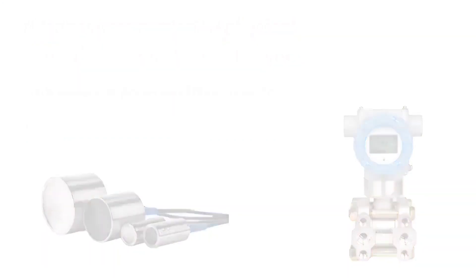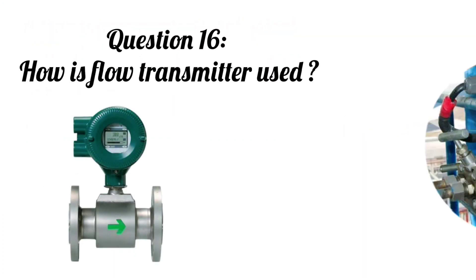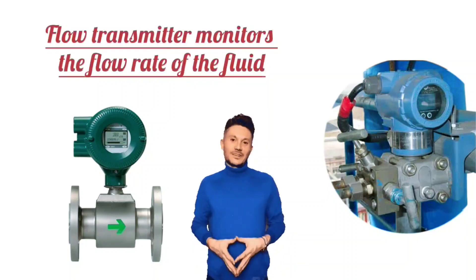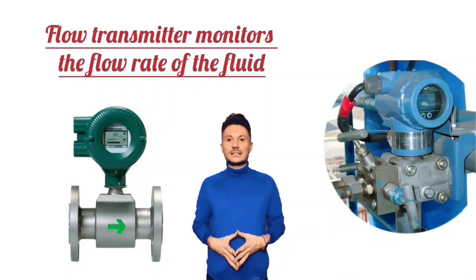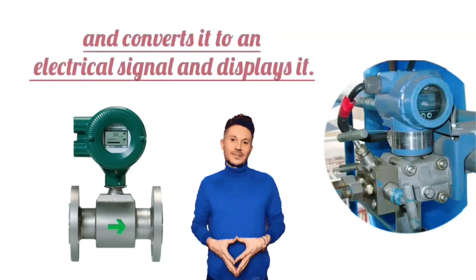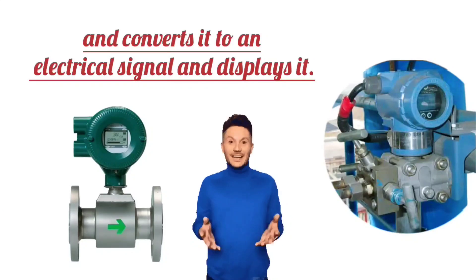Question 16: How is a flow transmitter used? A flow transmitter monitors the flow rate of the fluid, converts it to an electrical signal, and displays it.